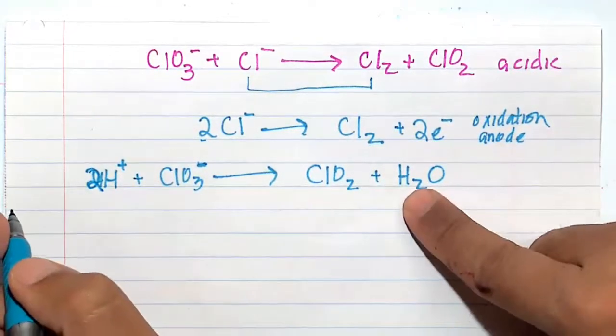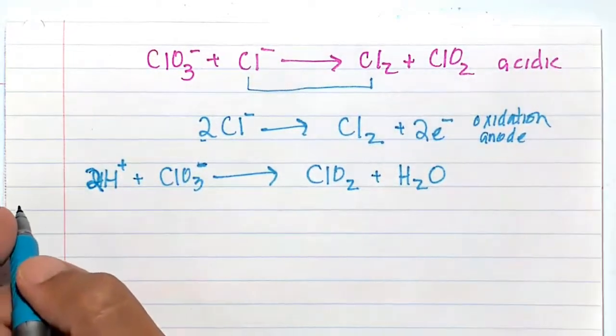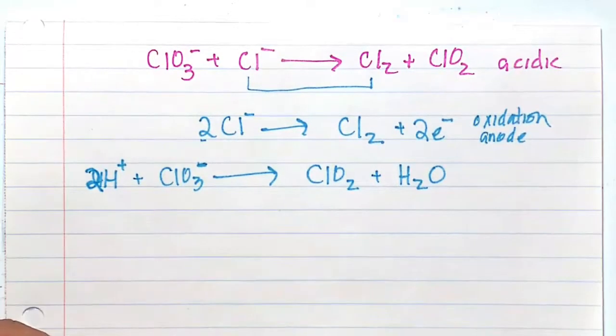And now this is going to be 2H+, right? Two hydrogens plus two hydrogens is balanced. And now we will balance this out with electrons.